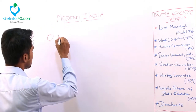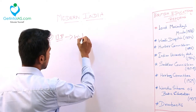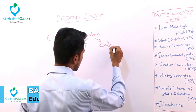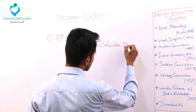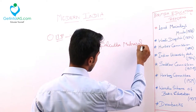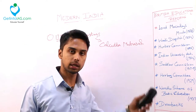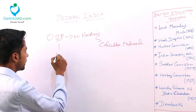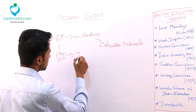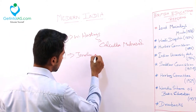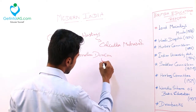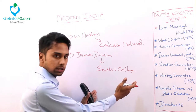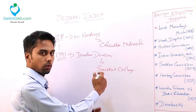By the year 1781, Warren Hastings set up something called Kolkata Madrasa to study the Muslim laws. The main aim of this setup is to study the Muslim laws. By the next 10 years, another person called Jonathan Duncan started something called Sanskrit College. The main aim of this Sanskrit College is to study the Hindu laws.